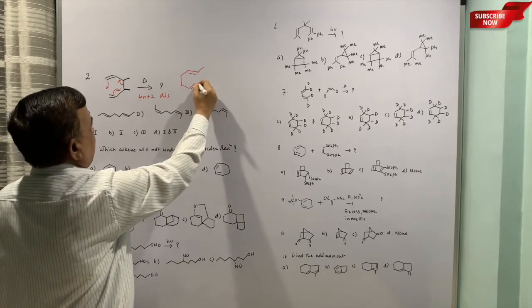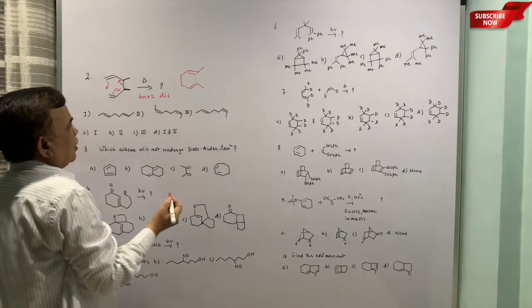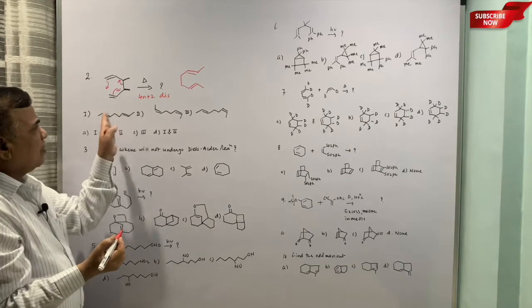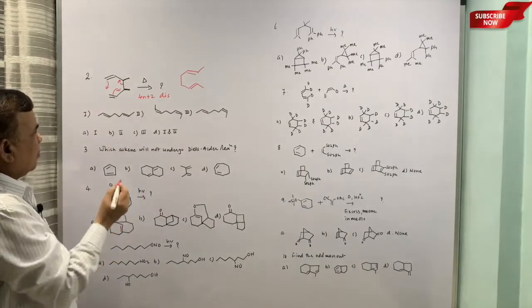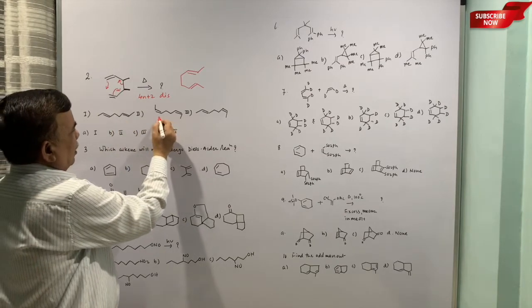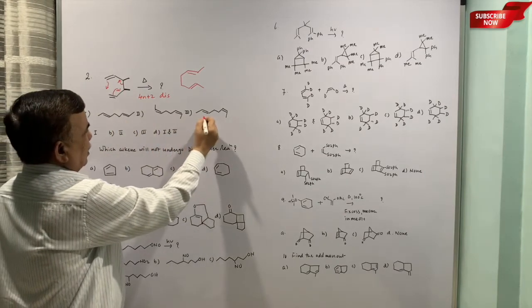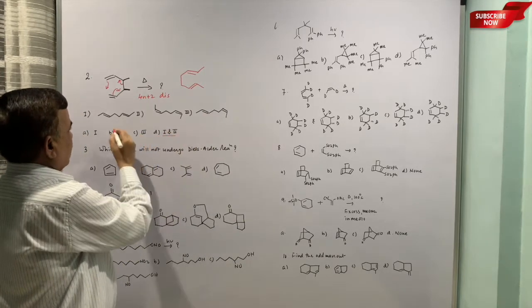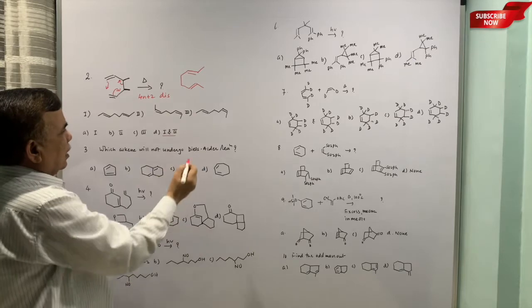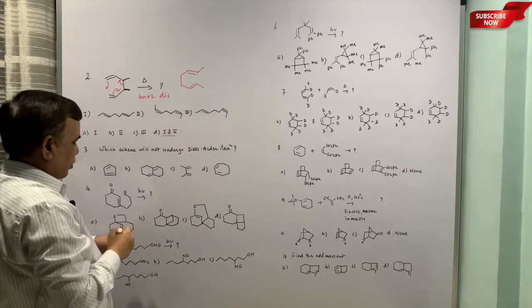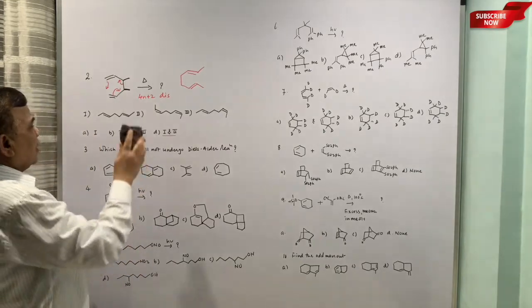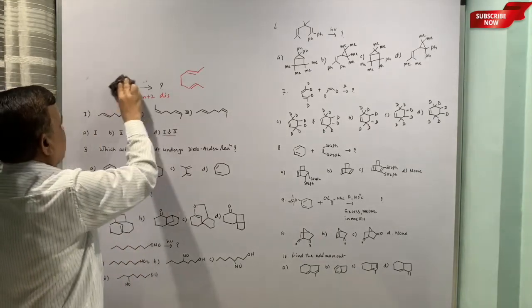And as a consequence of this disrotatory, means cis should become trans. The products are drawn in this system. This is trans-trans, this is also trans-trans, this is cis. So one and two is correct because here methyls are trans, here methyls are cis, so cis is not possible.